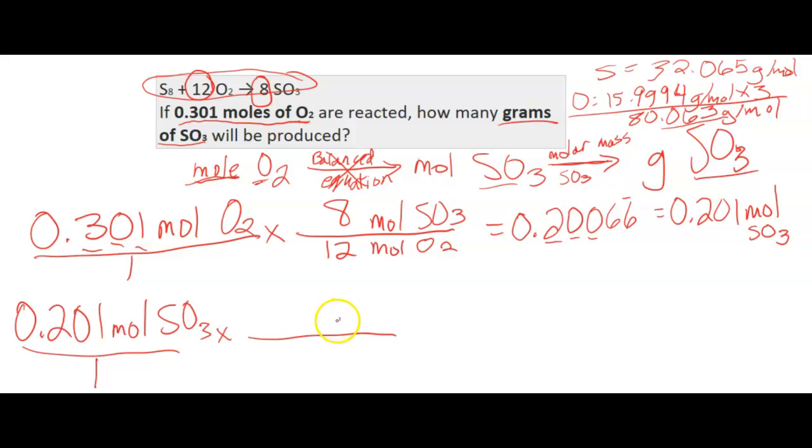So we want grams of SO3. We want to get rid of our moles of SO3. So we look at this molar mass. The grams is 80.063, and that's for every one mole. So I can multiply that through. And that gives me 16.092663.